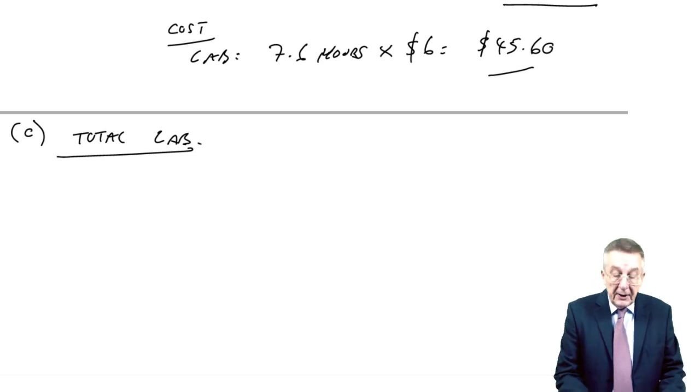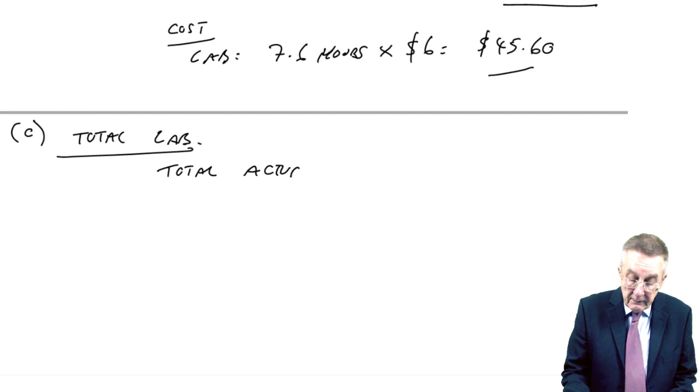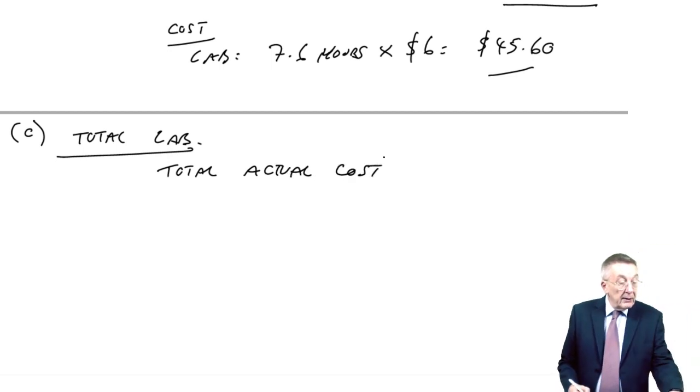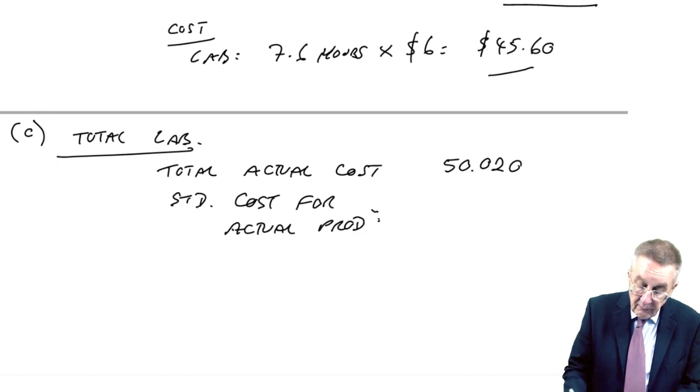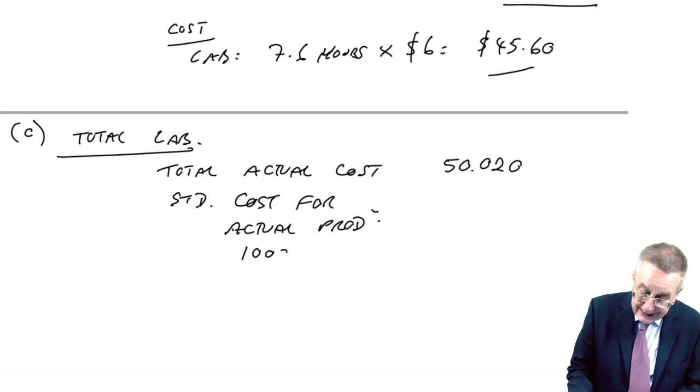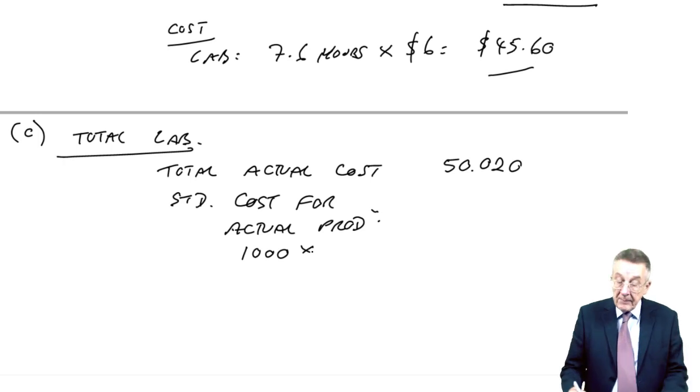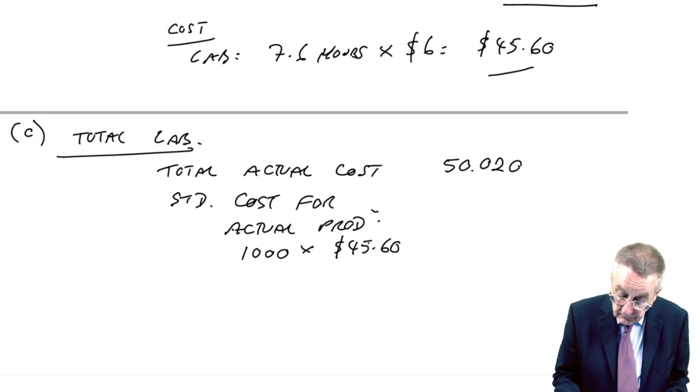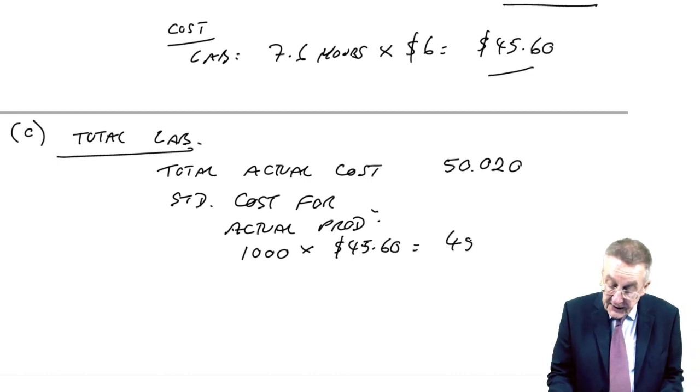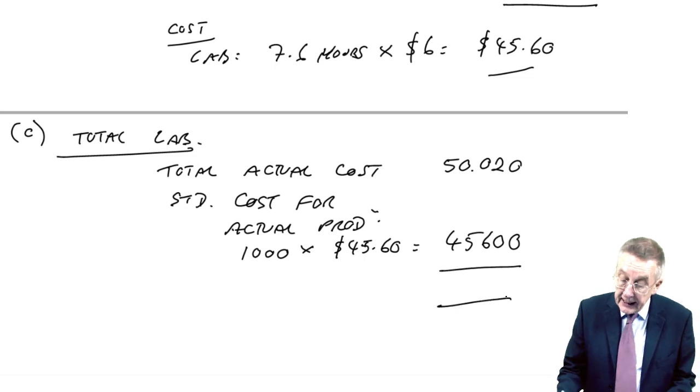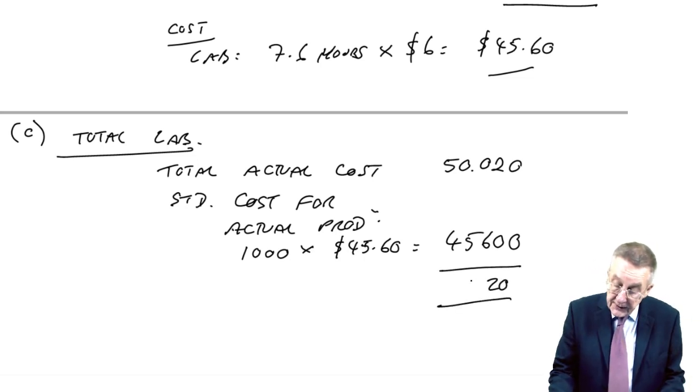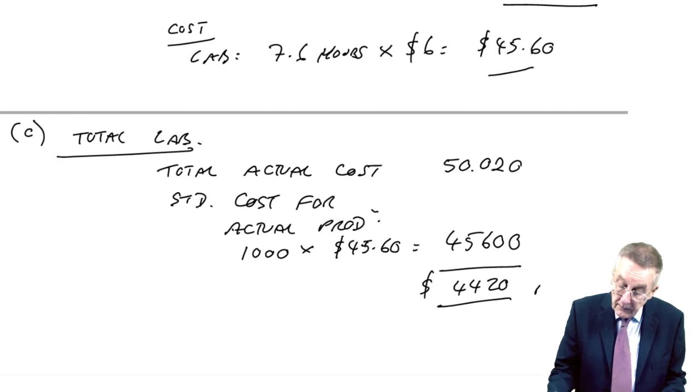Since here, we know the standards take 7.6 hours, pay $5.70 per hour, 5% idle, whatever. Let's have a go at doing the variances. First of all, it says calculate the total. So, forget any analysis, forget what's causing it. What's the total labour variance going to be? Well, for the total labour variance, we simply look at the total actual cost. How much did we pay? The hours paid 8,200 at a cost of 50,020. Now, compare it with the standard cost for the actual production. How many did we produce? 1,000 units. How much should each unit cost for labour? $45.60. Which is 45,600.